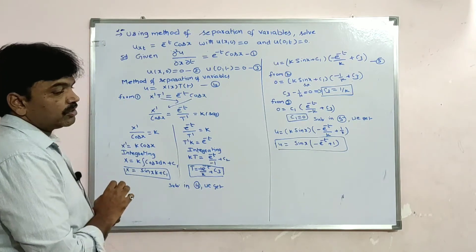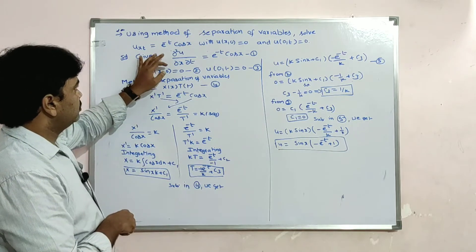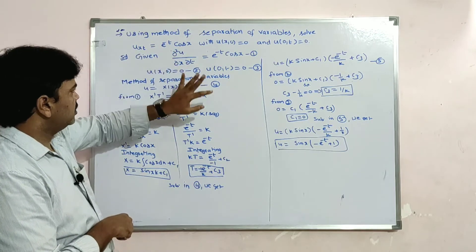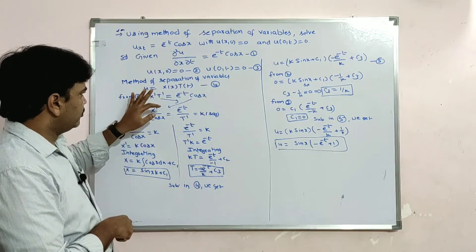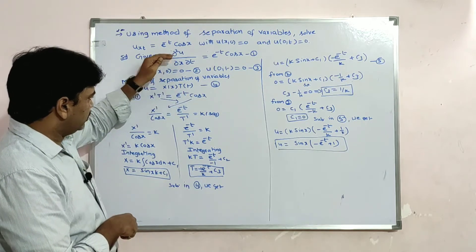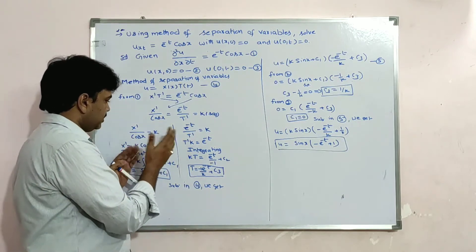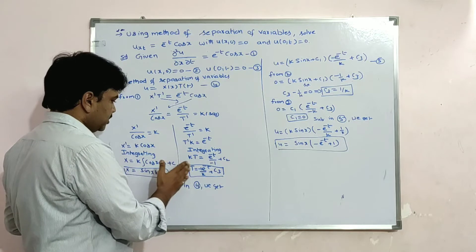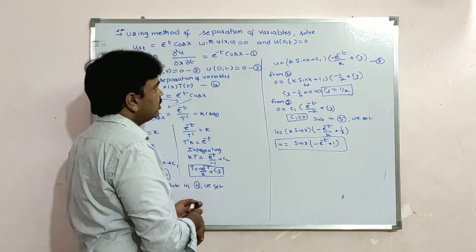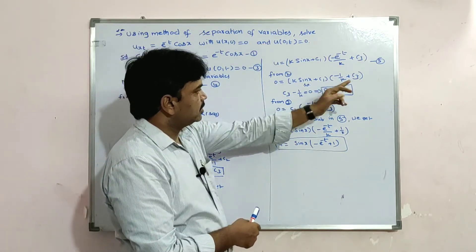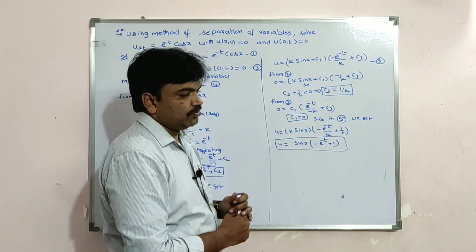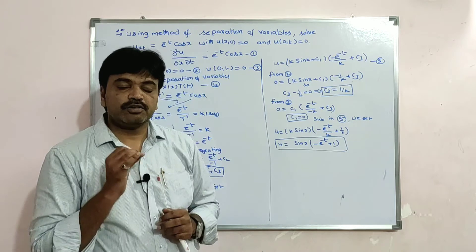This problem is very important — do it carefully. The given equation u_xt means ∂²u/∂x∂t. Apply the method of separation of variables, write u = X(x)·T(t), substitute into equation 1, separate the variables, integrate to get X and T, then apply conditions 2 and 3 to find c₁ and c₃ and obtain the final u value.